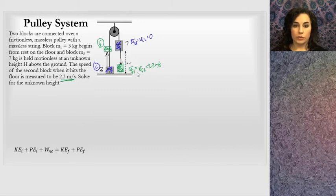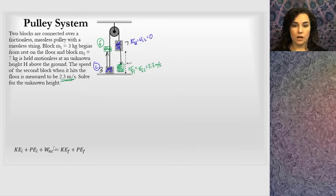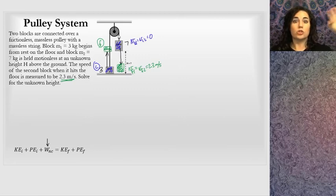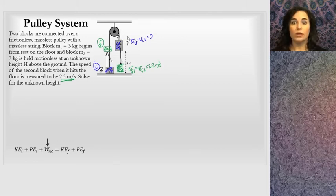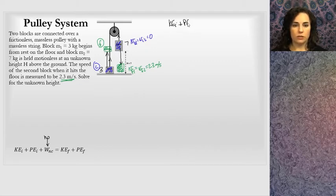The seven kilogram block starts an unknown height H above the ground - that's what we're solving for. Are there any non-conservative forces? The tension is technically a non-conservative force, but when I look at the entire system, there is no external tension on it. Whatever tension acts upward on one block acts upward on the other and balances out within the system. So there are no non-conservative forces acting on the entire system.